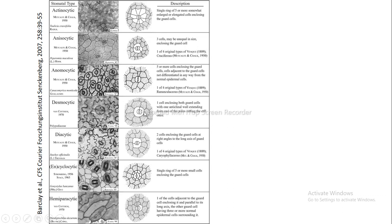Diacytic — 'dia' means two — so two subsidiary cells enclose the guard cells, but they are oriented at right angles, meaning the longer axis of the surrounding cells is perpendicular to the longer axis of the guard cells. Two cells enclosing the guard cells at right angles to the long axis of the guard cells is known as diacytic.